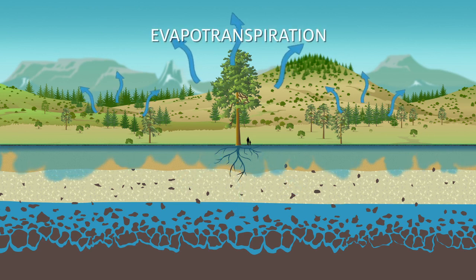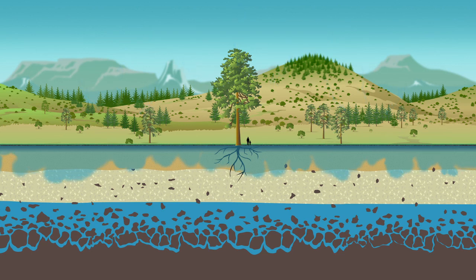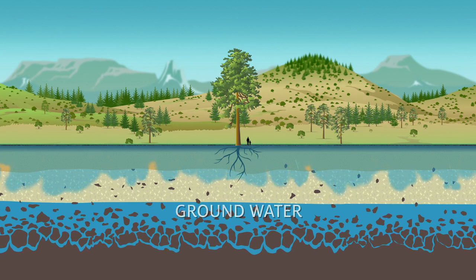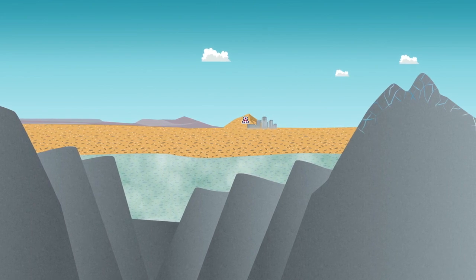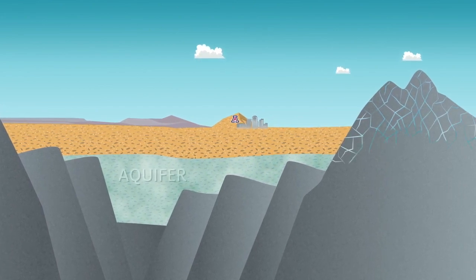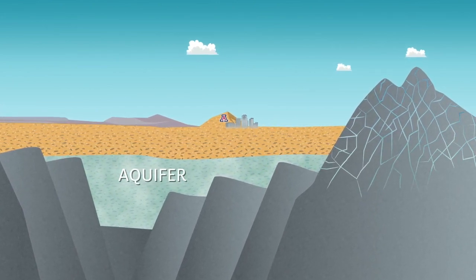Some of the water sinks deep into the soil to become what we call groundwater under the surface of the land. And some of the water travels through cracks in mountains or rocks to fill large, deep underground basins called aquifers.